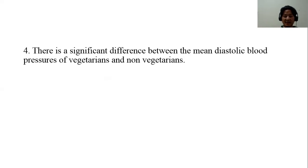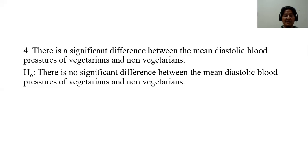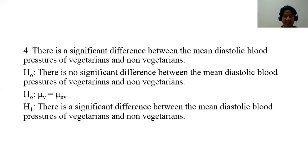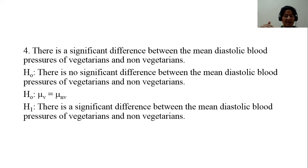Example four: there is a significant difference between the mean diastolic blood pressure of vegetarians and non-vegetarians. The null hypothesis states there is no significant difference. The alternative hypothesis states there is a significant difference, and since no specific direction is stated, the symbol used is not equal (≠).